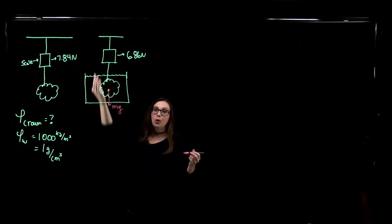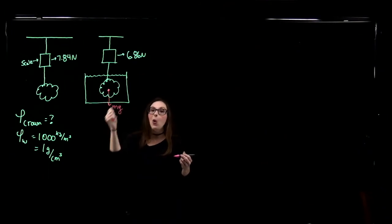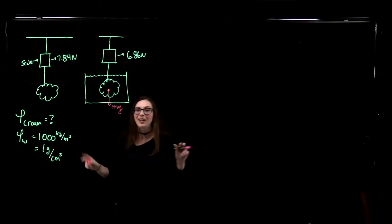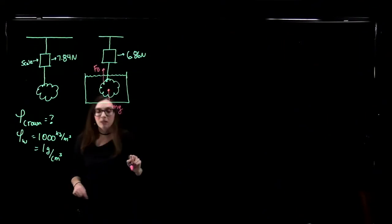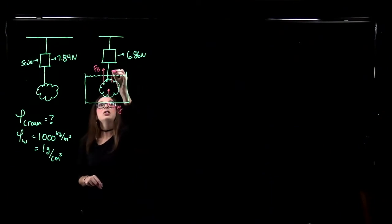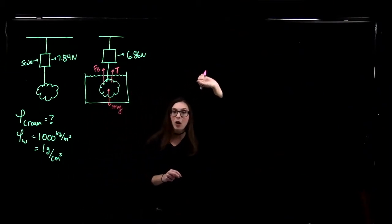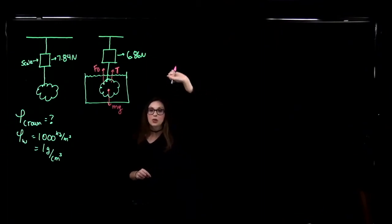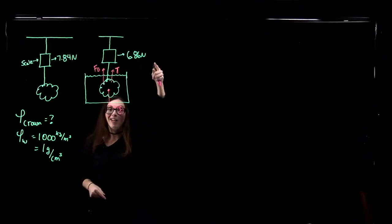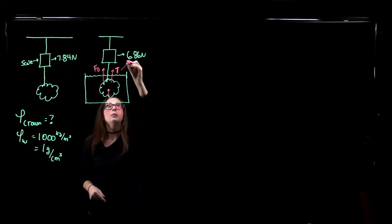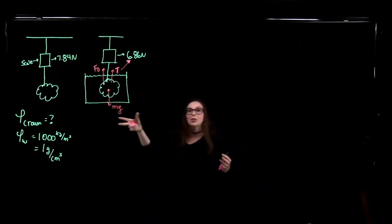Let's draw the free body diagram for our crown submerged in the water. It has its mass times gravity pointing downward — always, even if you're floating in a liquid. Then we've got the buoyant force pushing upward from the surrounding fluid. And we have the tension force pulling up, because our crown is connected to the scale by a hook. That tension force is going to be exactly equal to what is being read on the scale — which we call the apparent weight of our object when it is submerged.